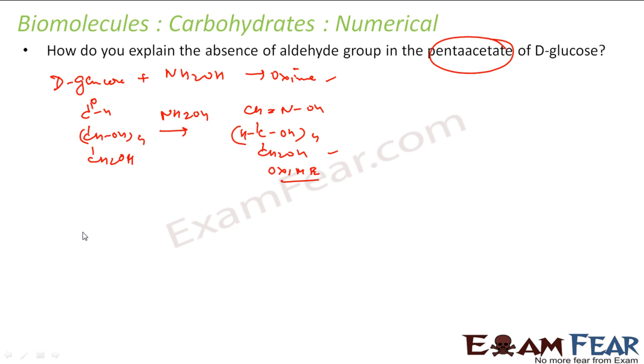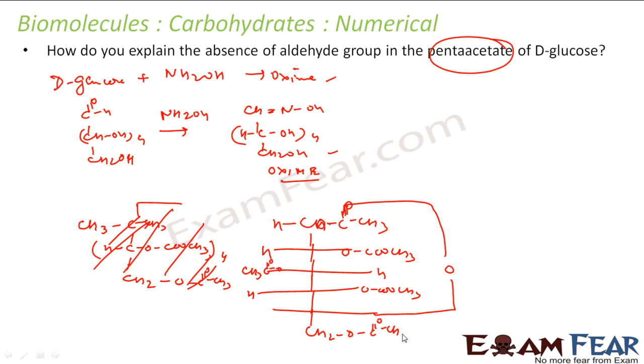This is pentaacetate of D-glucose. This ring, even in aqueous medium, will not break. Since the cyclic structure will not break, there is no free aldehyde or ketone, so it will not react with NH2OH. This explains the absence of aldehyde groups in pentaacetate of D-glucose.